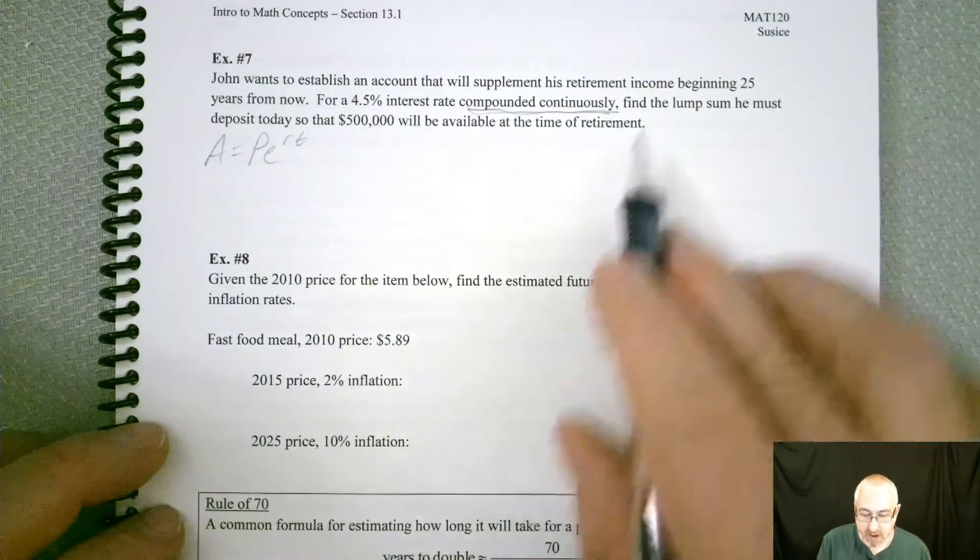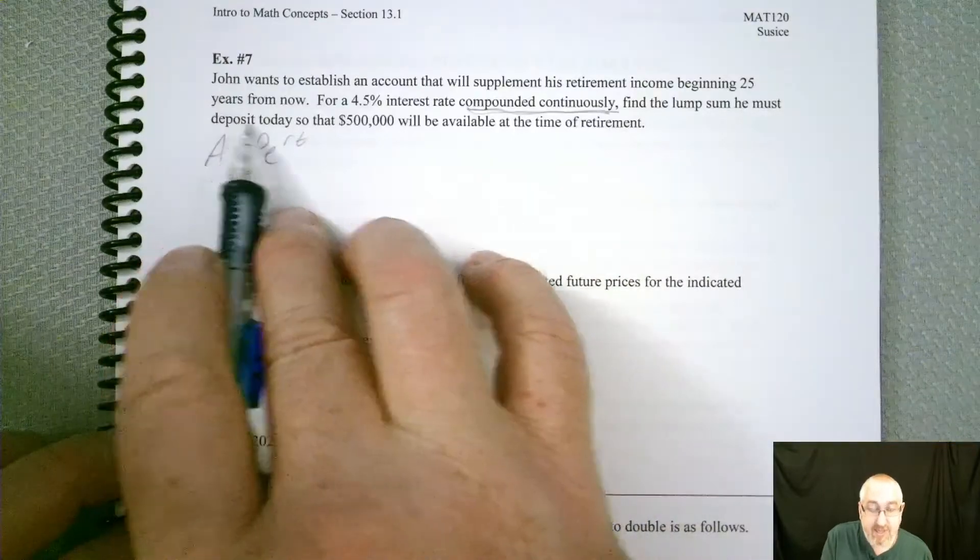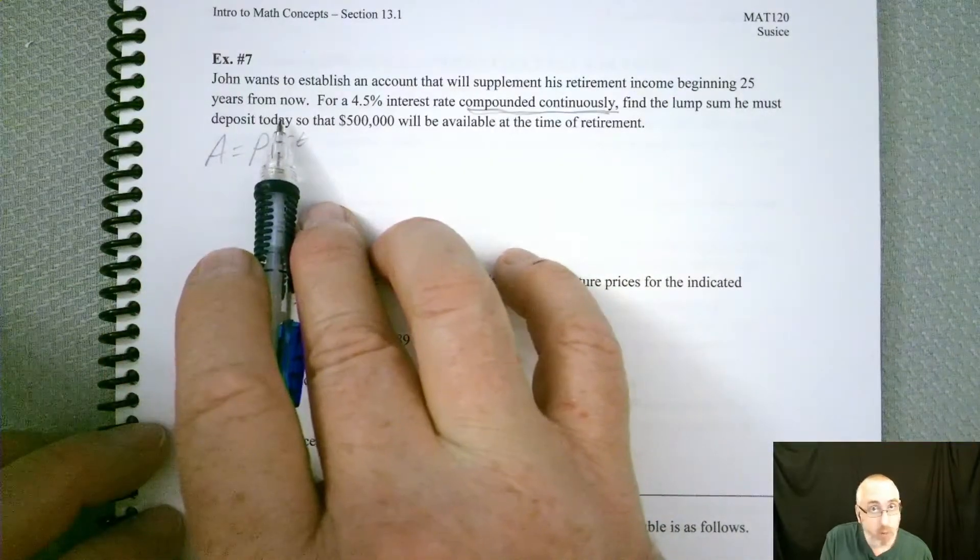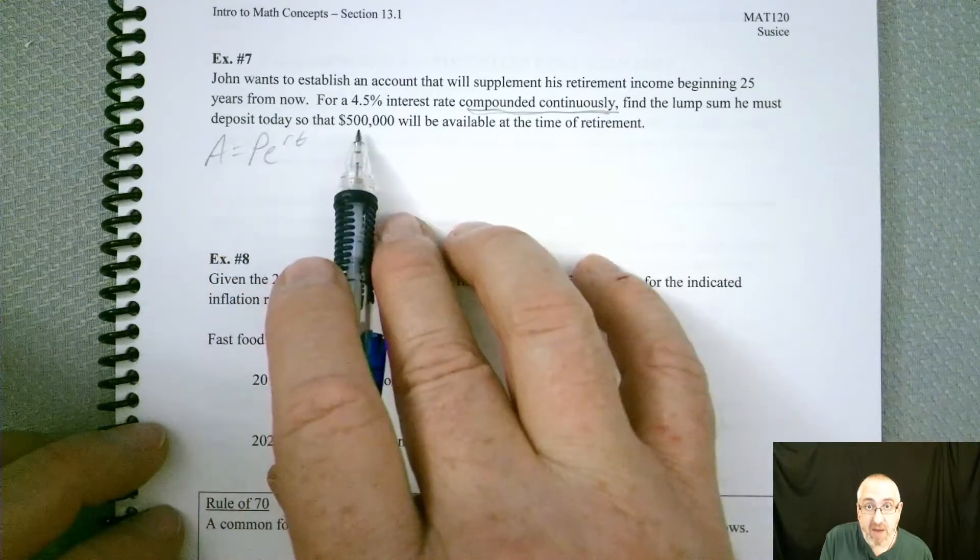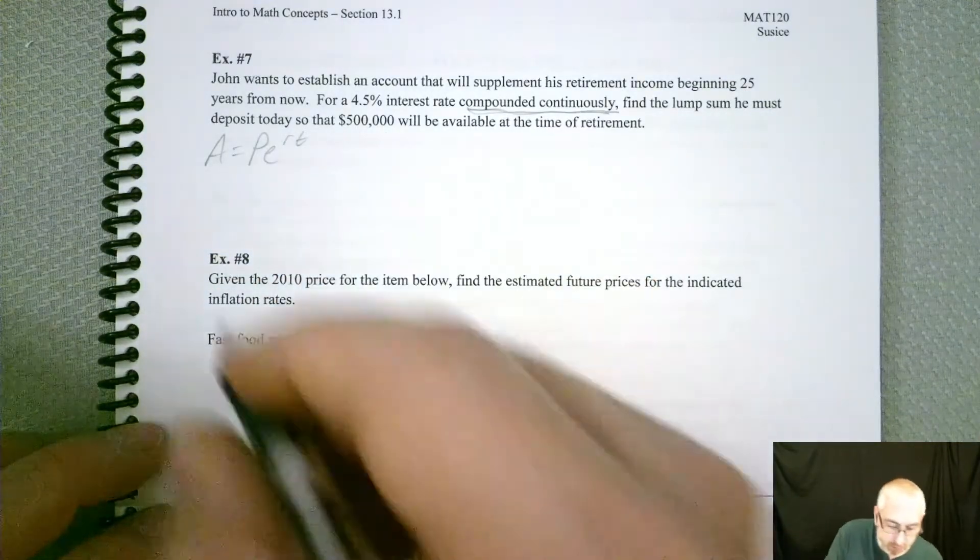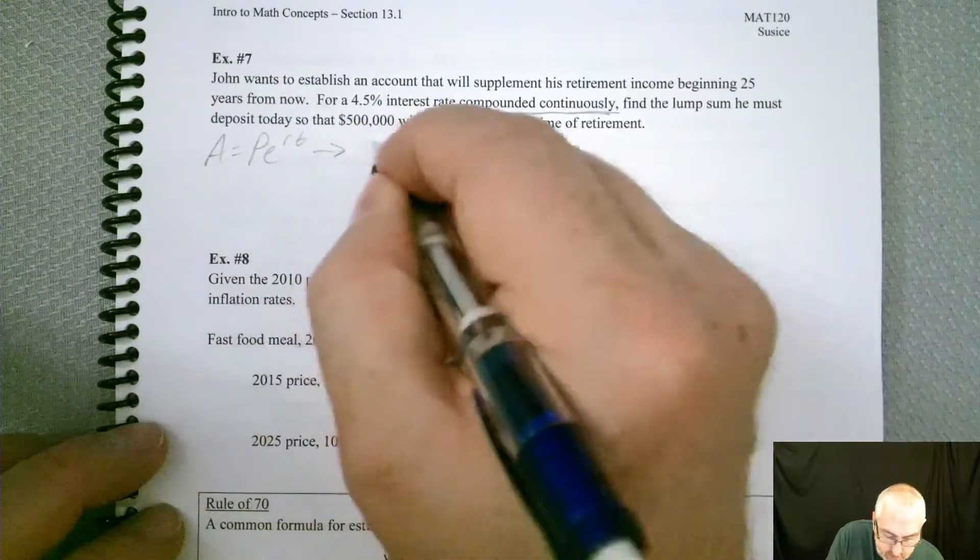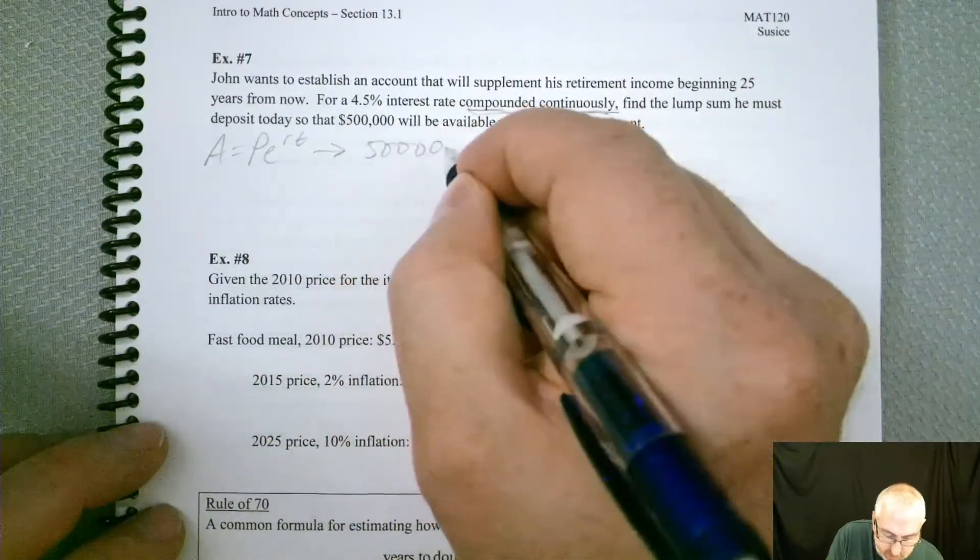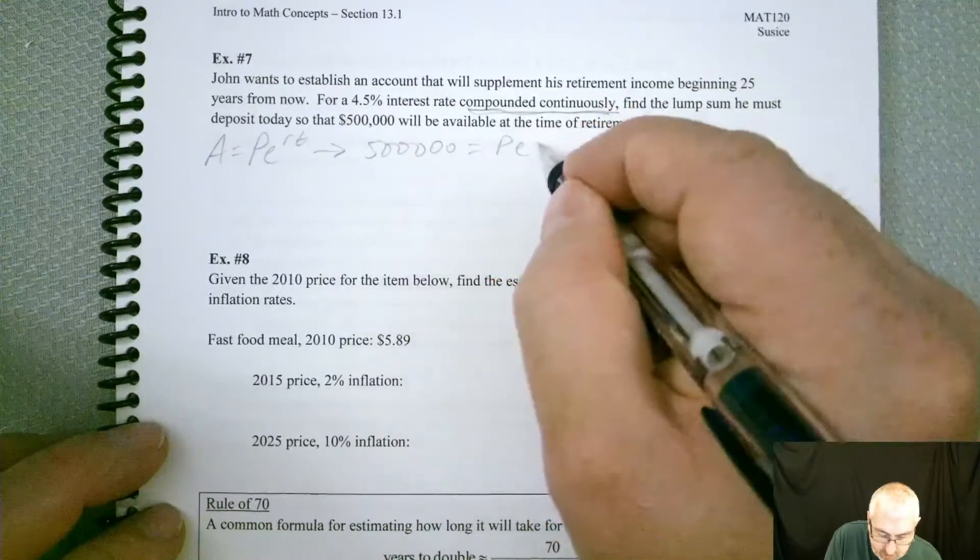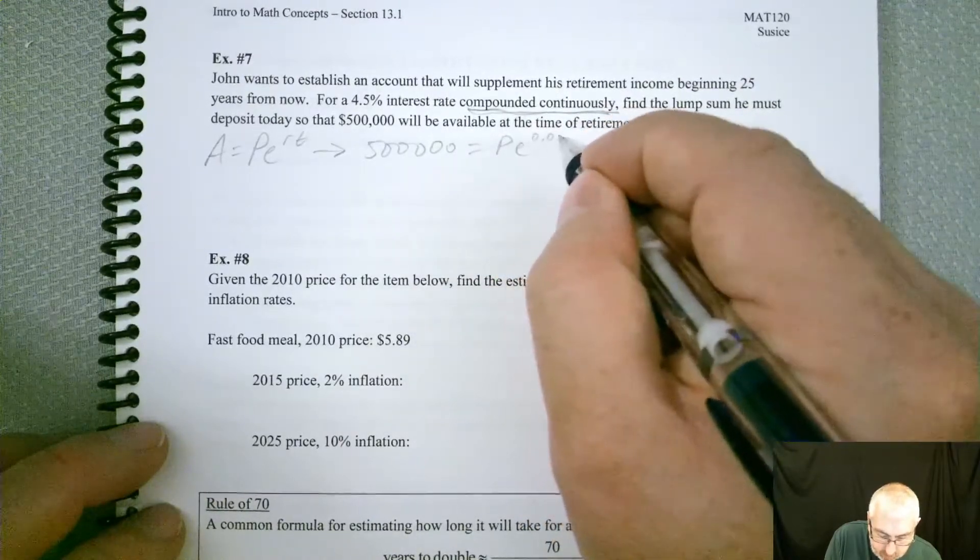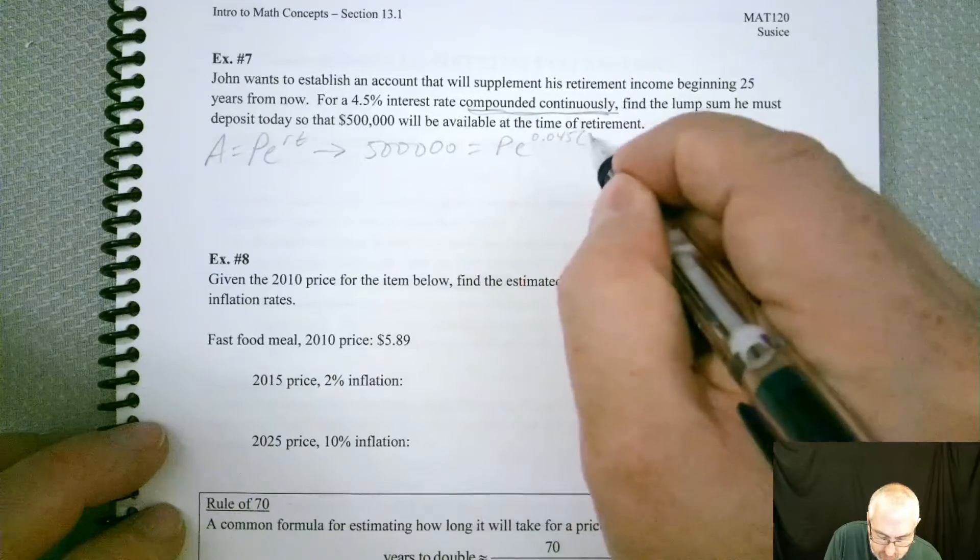So find the lump sum he must deposit today. They don't know. We don't know what P is, but we want $500,000 in the future. So that means we should have $500,000 here equals P, E, and then 0.045 times 25.